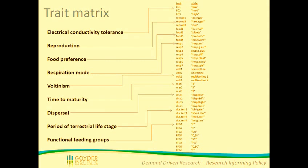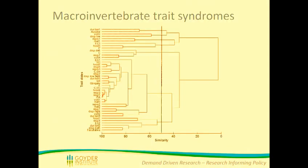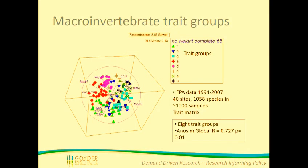The specific traits we used included ecological conductivity tolerance, reproduction, food preference, respiration mode, voltanism, time to maturity, dispersal, period of terrestrial life stages, and functional feeding groups. We used these traits to assess whether the groups we came up with had predominantly resistance or resilient strategies towards a drying climate or increases in zero flow days. This is the underlying cluster analysis we used to create those trait groups, and we ran an ANOSIM to make sure those trait groups were actually distinct from one another.